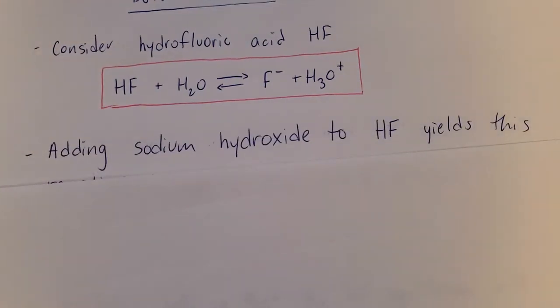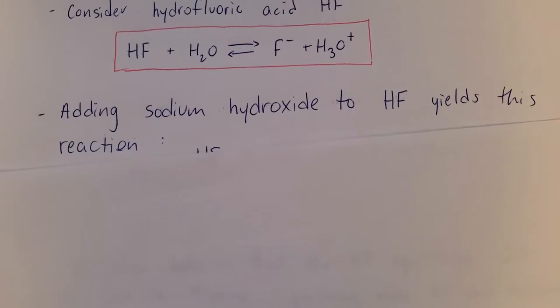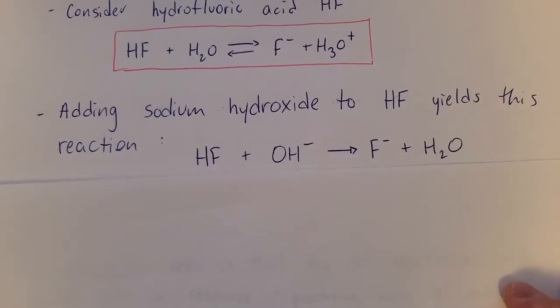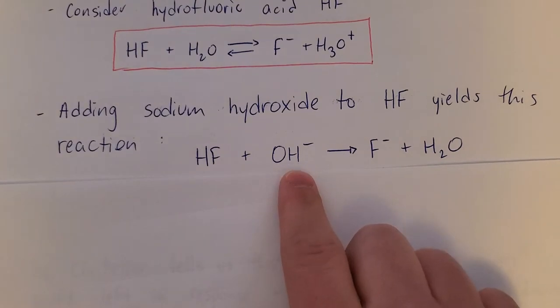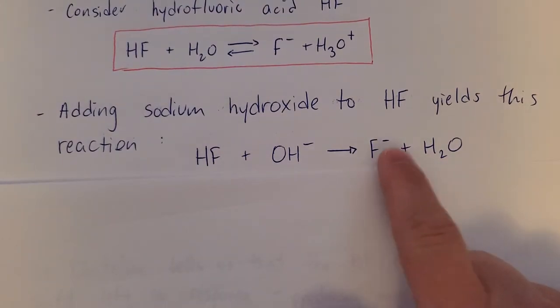If we react this weak acid with a strong base, this is what it's going to look like. You're adding hydroxide. There's a proton transfer. You get more fluoride, get some water. Forget about the water.